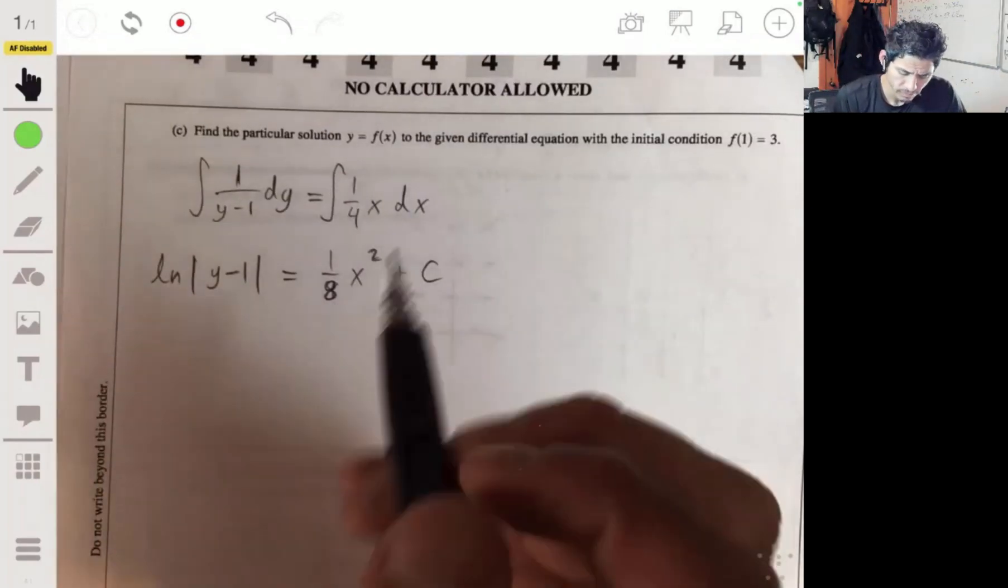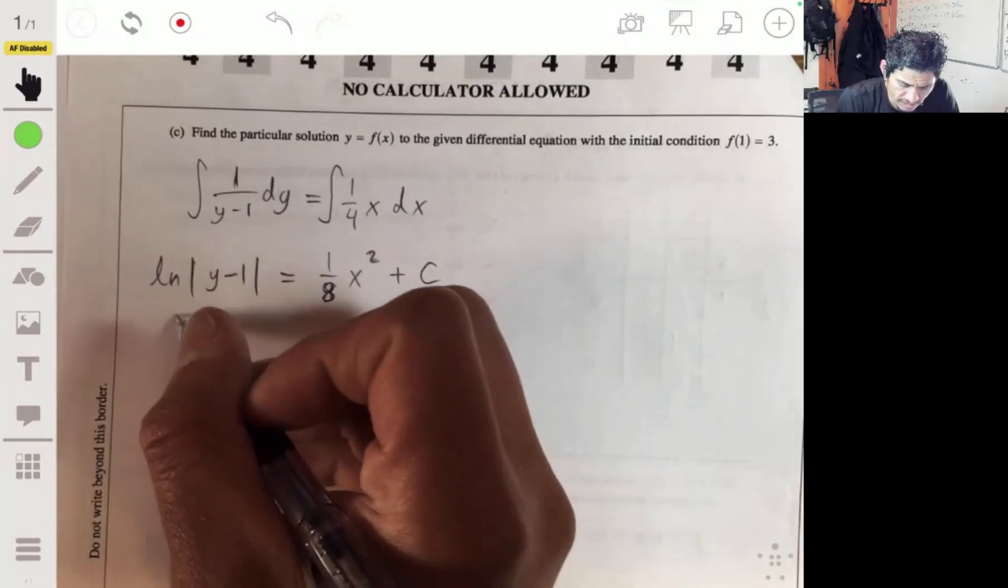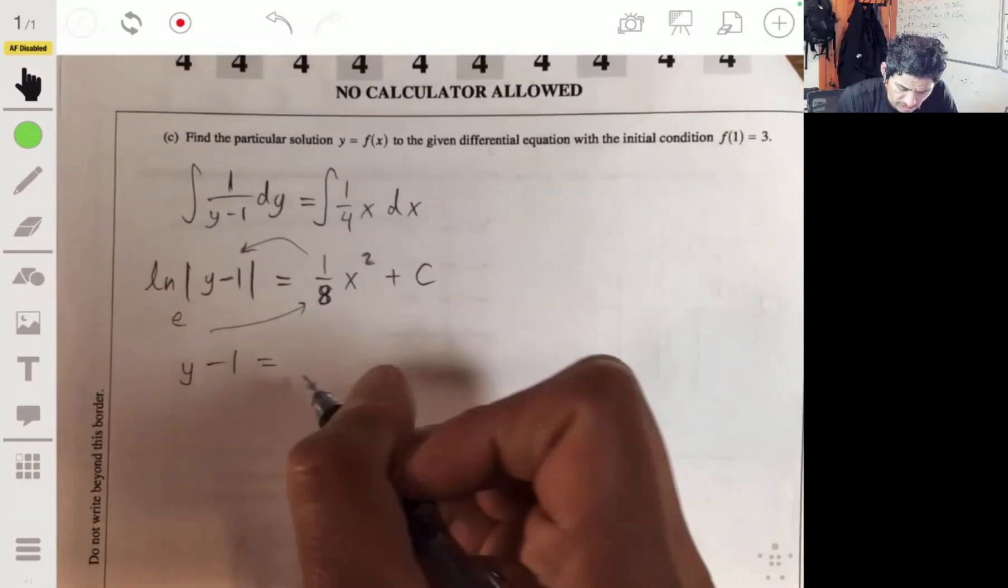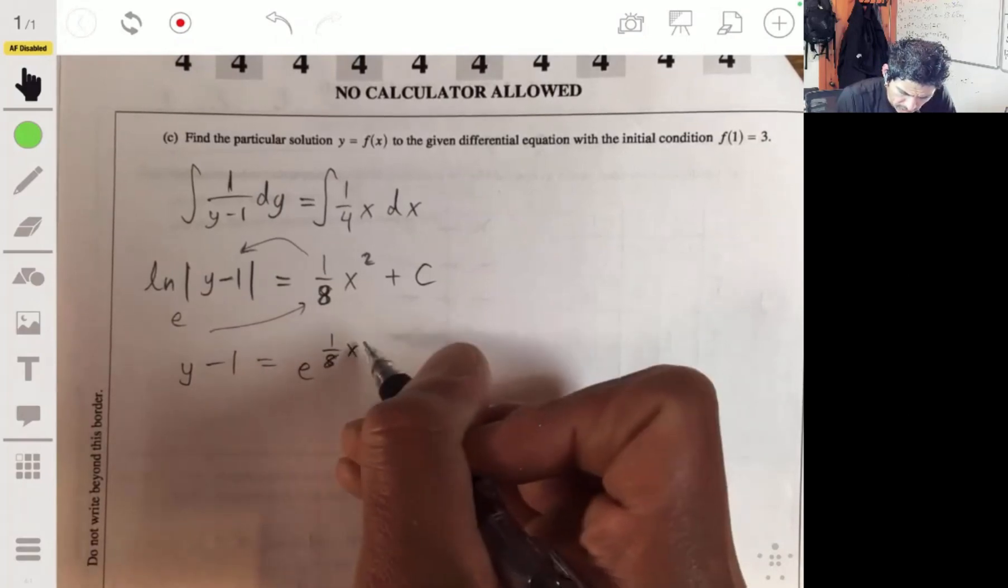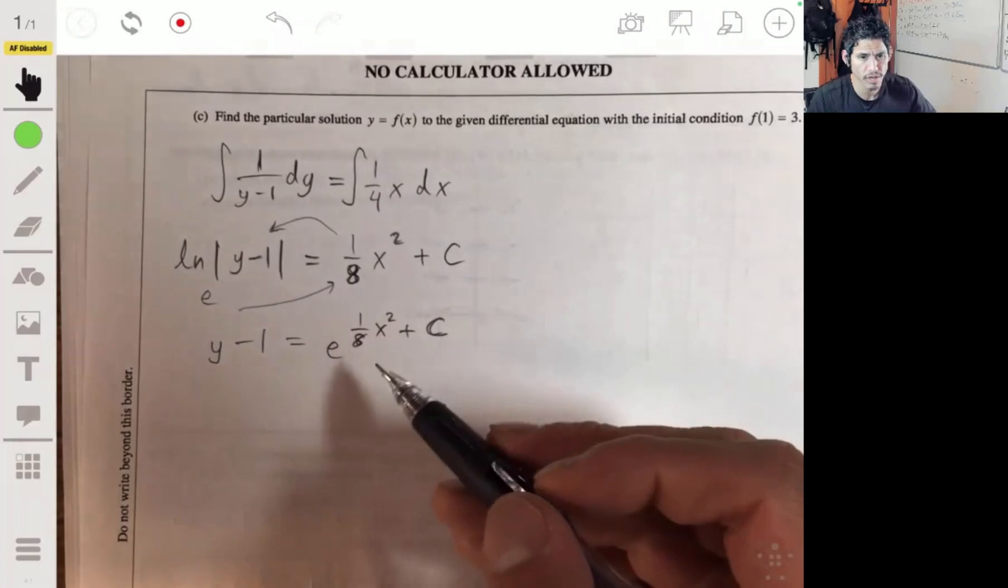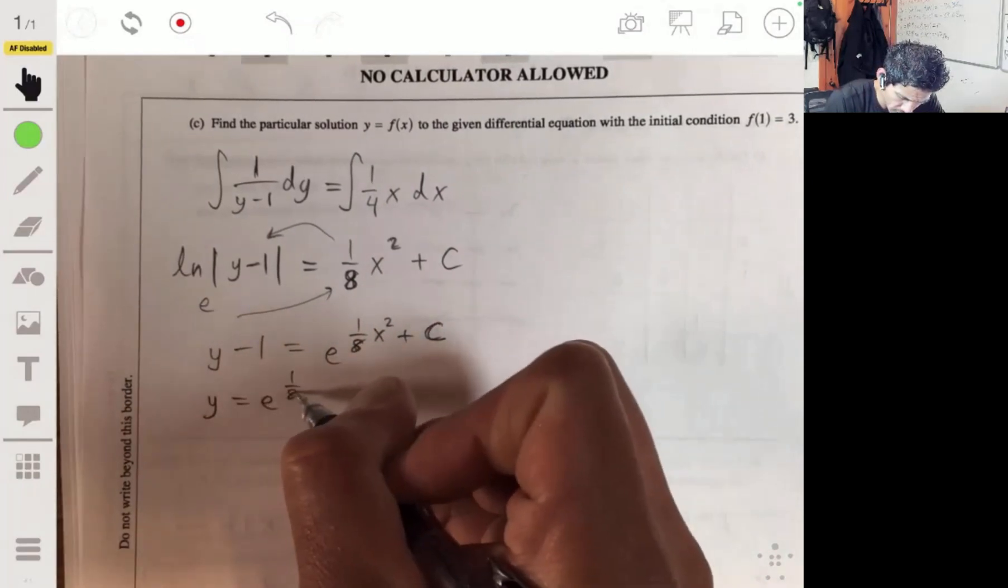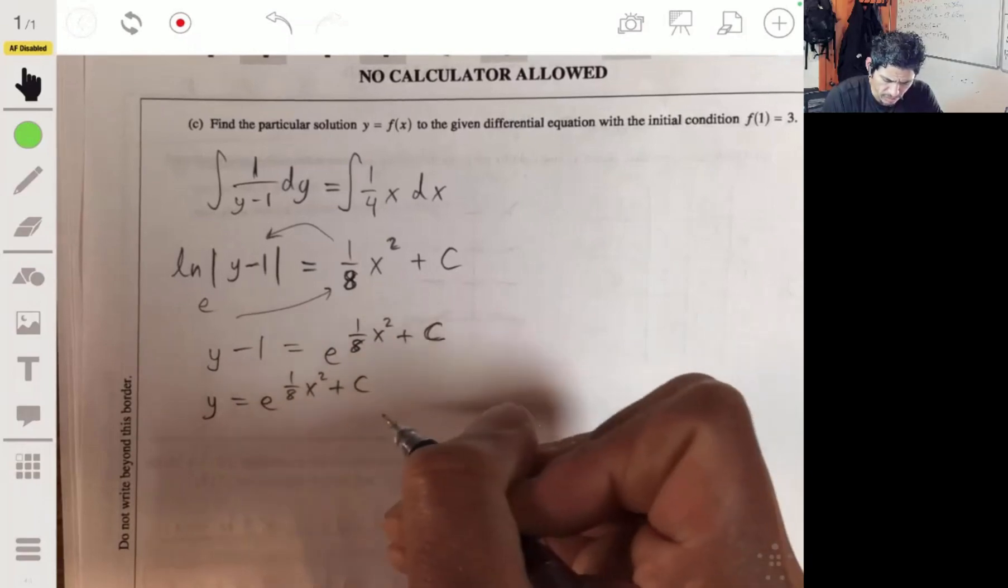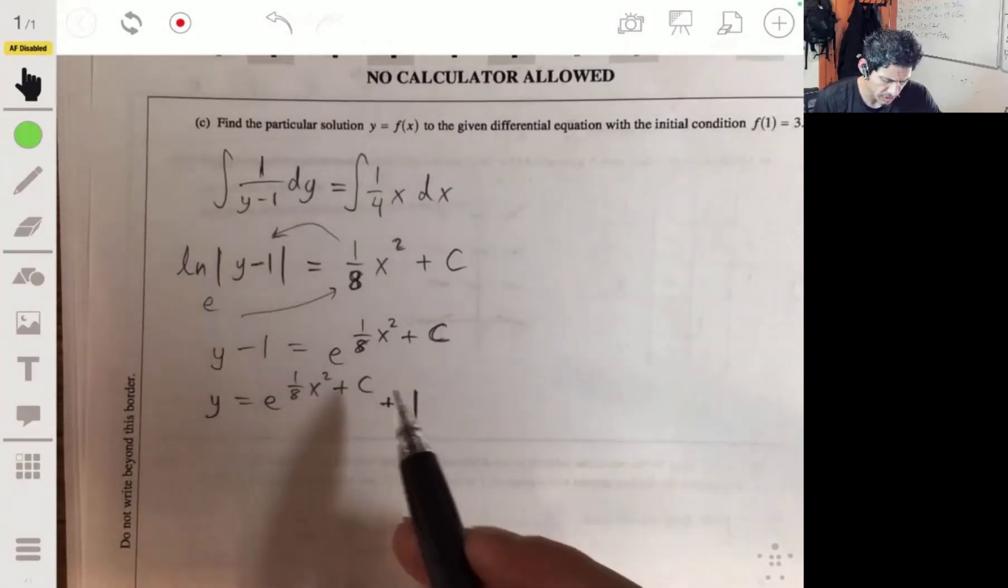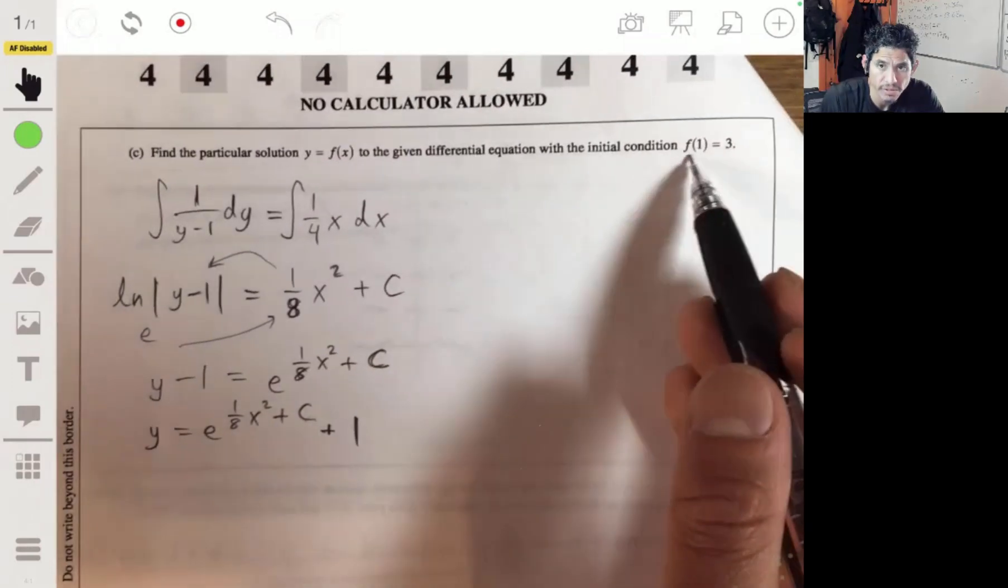Now, since the initial condition f(1) is 3, we know this will be positive, so we don't even need the absolute value signs. And let's take the exponential because this is base e raised to that, it's going to give you this. So y minus 1 equals e to the one eighth x squared plus c. Now let's add 1 and solve for y. Essentially we're solving for y here. Y equals e to the one eighth x squared plus c plus 1. And then from here we want to solve for c. That's our constant of integration and we're going to use the point (1,3) to solve for it.